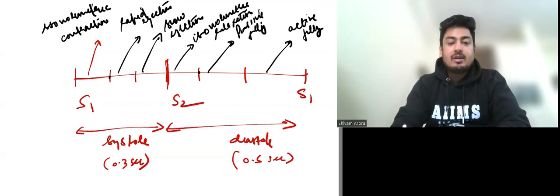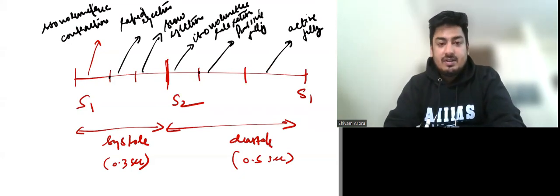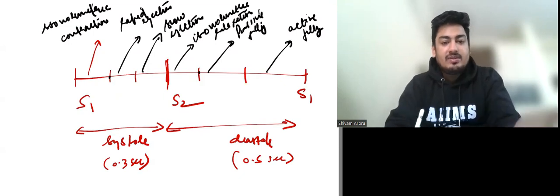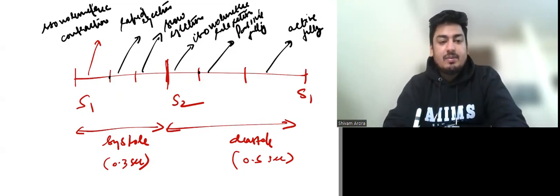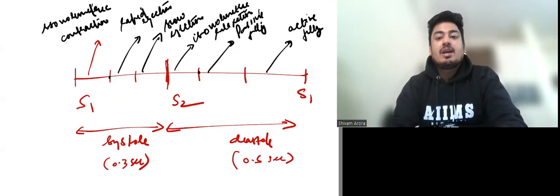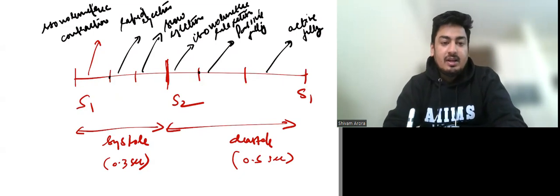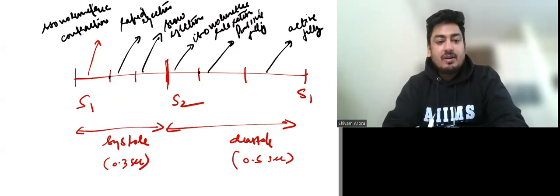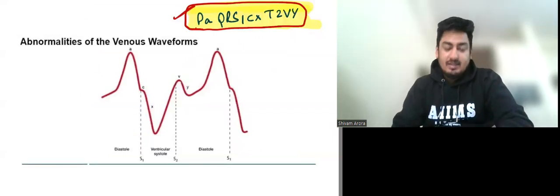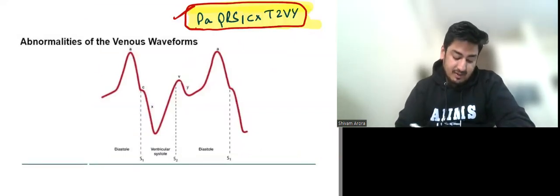Now what is JVP? JVP refers to pressure changes in the right atrium, because the RA is connected to the SVC, and the SVC is connected to the jugular vein. So basically JVP reflects the pressure wave changes of the RA, and we can extrapolate cardiac diseases from there.